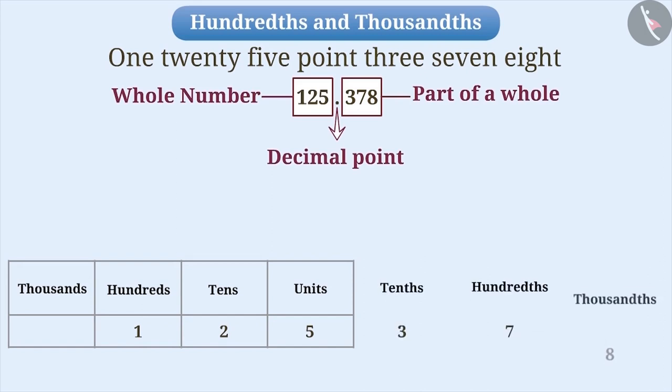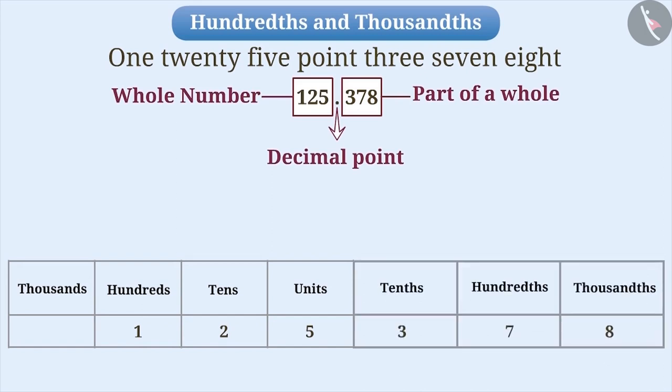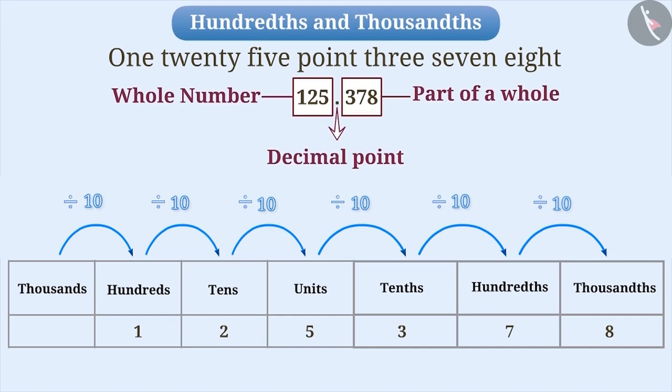To represent it, we will use places like Tenths, Hundredths, Thousandths, etc. If we move from right to left, the value of each place increases by 10 times of its previous place. So, we will keep on multiplying with 10 in this direction. Similarly, if we move from left to right, the value of each place decreases by one-tenth from its previous value. So, we will keep on dividing with 10 in this direction.